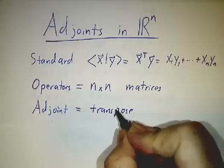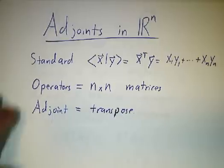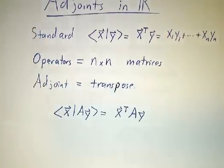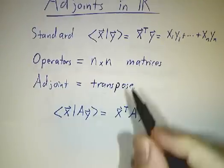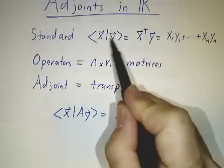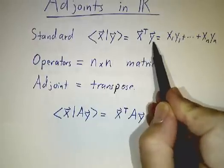You're familiar with a transpose. In fact, you can think of adjoints as in some sense a generalization of transposes. Why is that? Well, the inner product of x with Ay—remember the inner product of two vectors, you take the transpose of the first and you multiply it by the second.